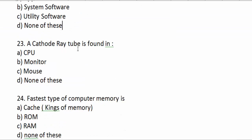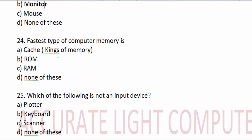A cathode ray tube is found in the monitor. The fastest type of computer memory is cache memory — cache is the king of memory.